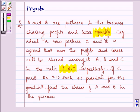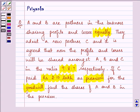If C paid rupees 2.10 lakh as premium for goodwill, find the shares of A and B in the premium.